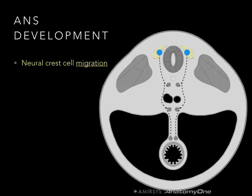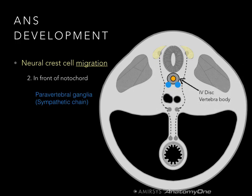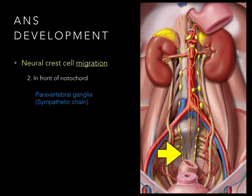Some graduating neural crest cells migrate in front of the notochord and just to the side. Since that notochord becomes the intervertebral disc as part of the vertebral column, we call those the paravertebral ganglia, or the sympathetic chain. Looking at a frontal view, there are sympathetic ganglia one after another running to the side of the vertebral column — that's what we call paravertebral ganglia, or the sympathetic chain.